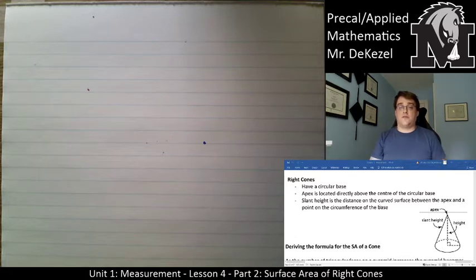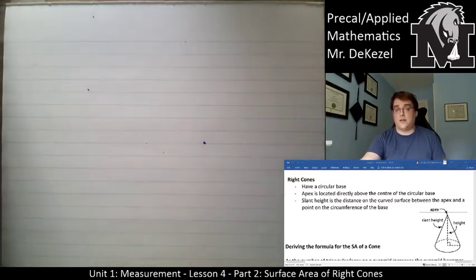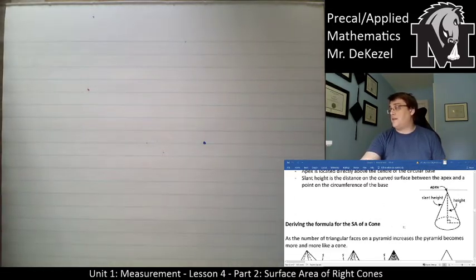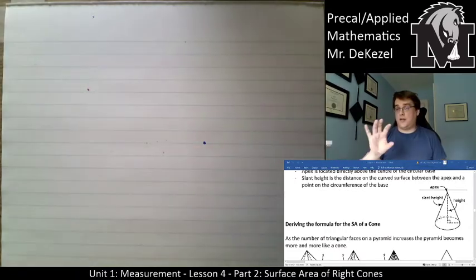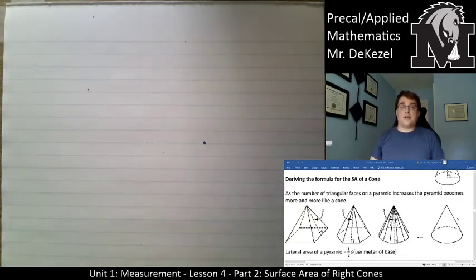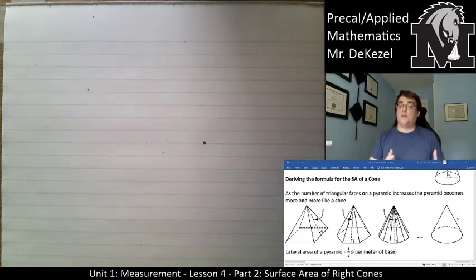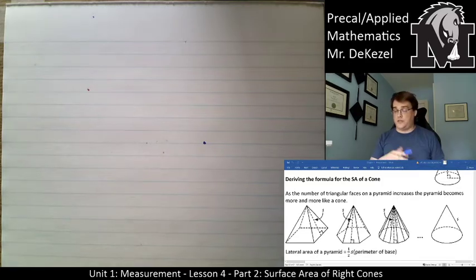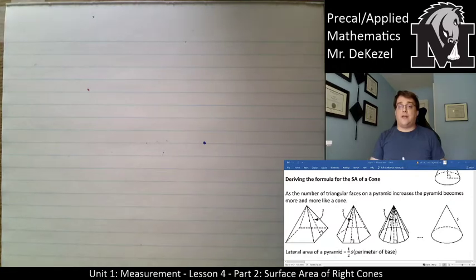The slant height is the distance on the curved surface between the apex and a point on the circumference of the base. The circumference is the distance around the circle. As the triangular faces get more and more numerous, they become closer and closer to a cone. The lateral area of the pyramid is one half times the slant height times the perimeter of the base.